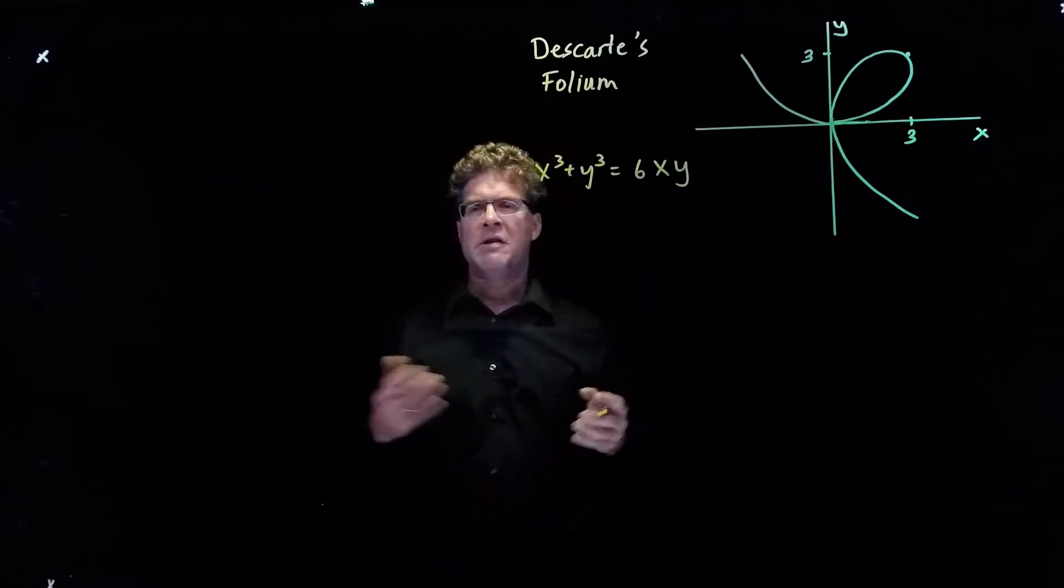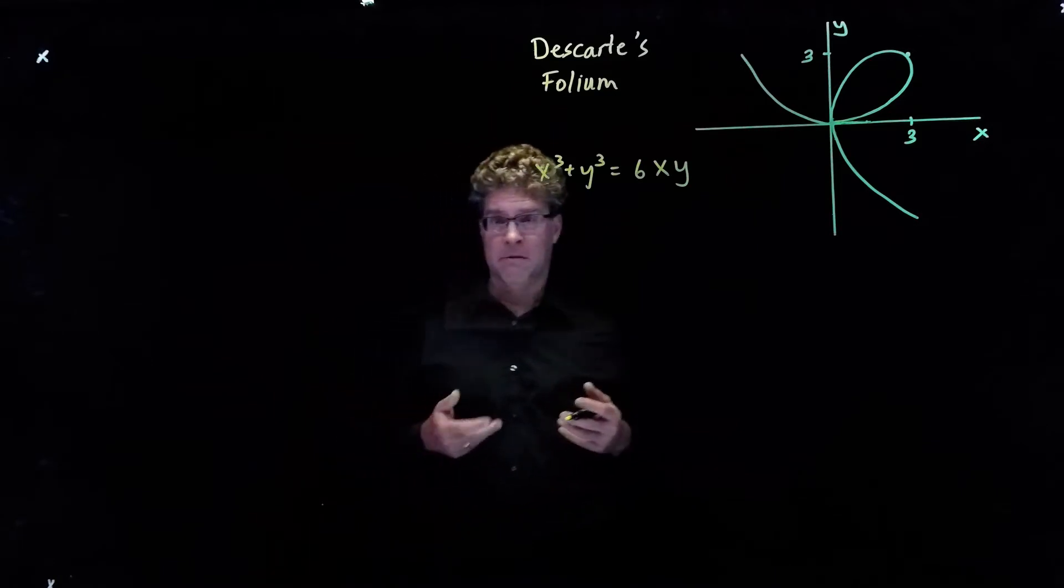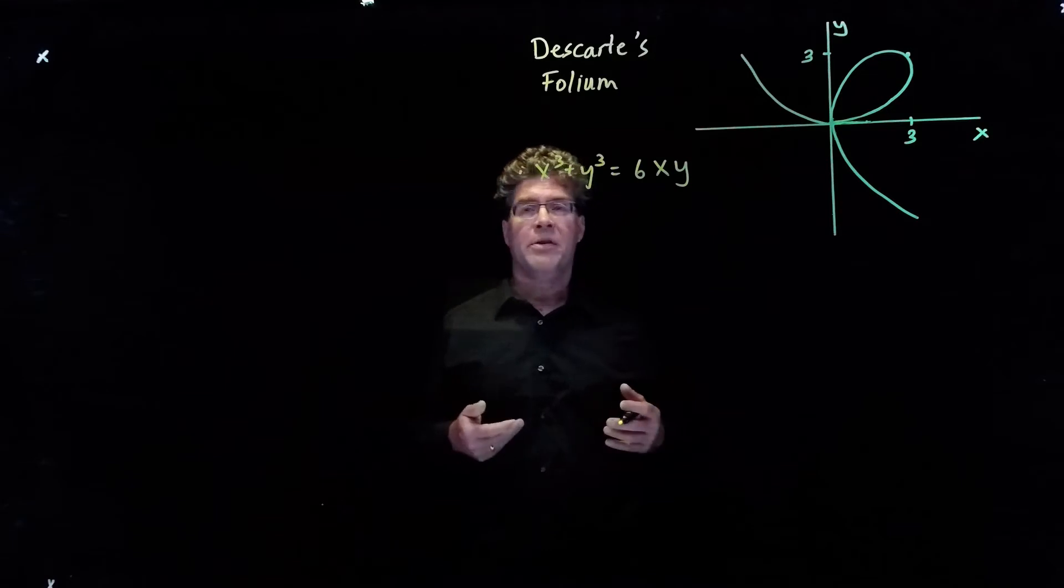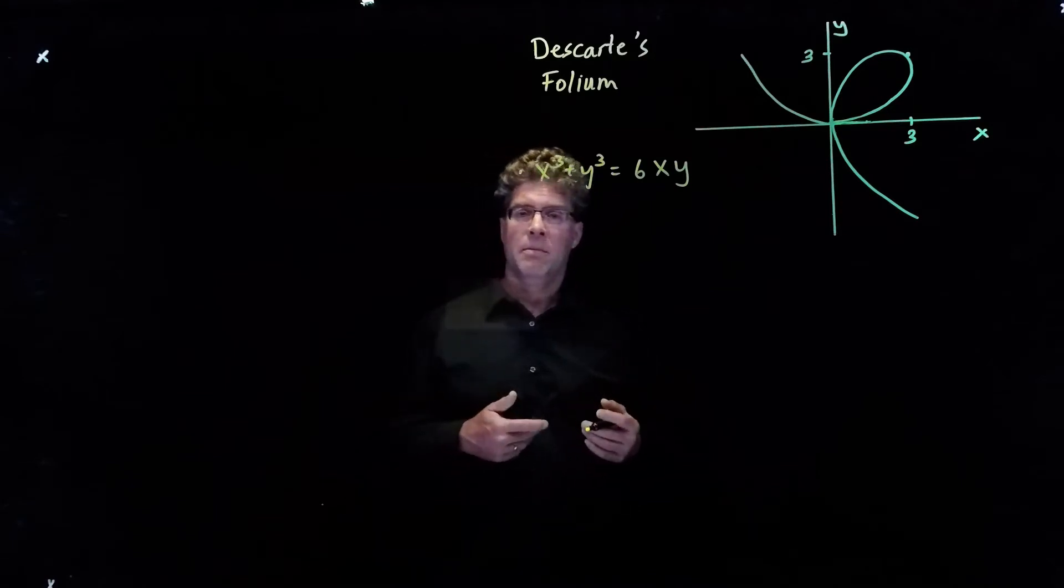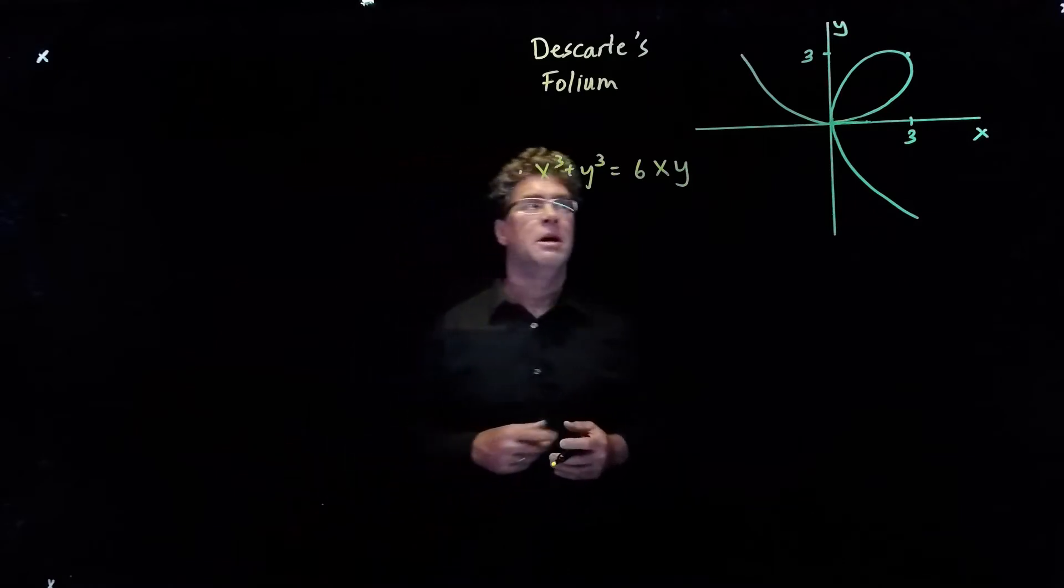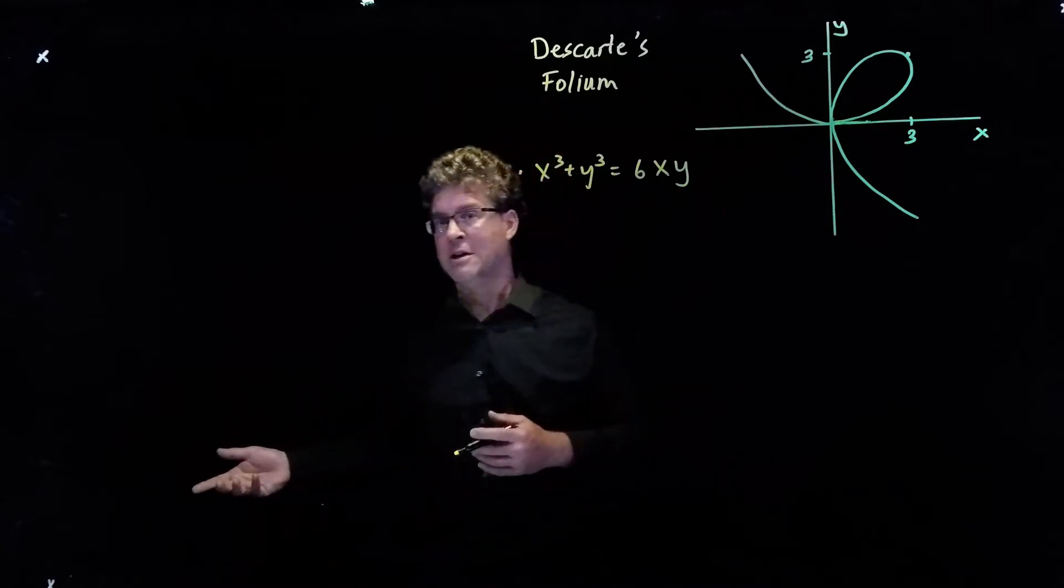Around the 1600s, people were trying to work out tangent lines for increasingly difficult problems. Descartes came up with this folium, and he said to Fermat, another mathematician at the same time, I bet you can't compute the formula for the tangent line to this curve, except he said it in French.